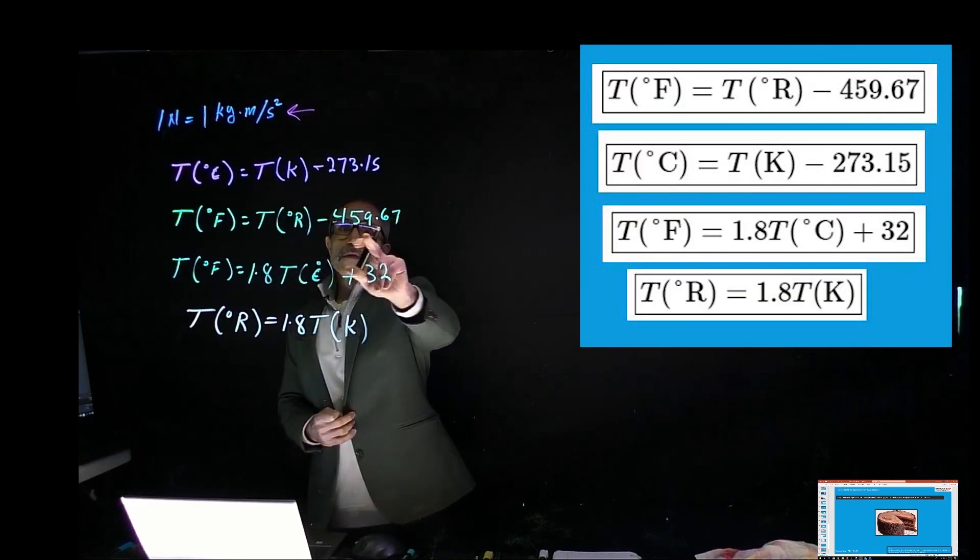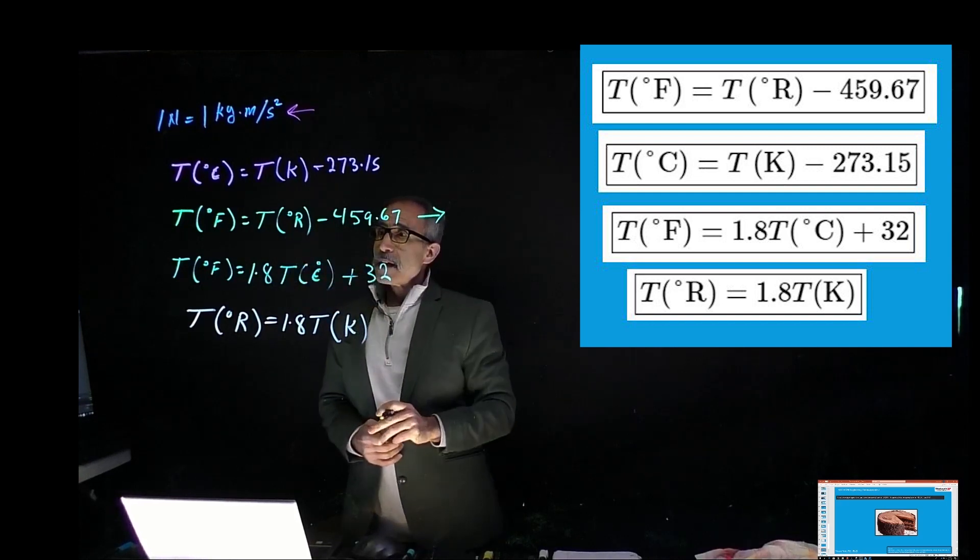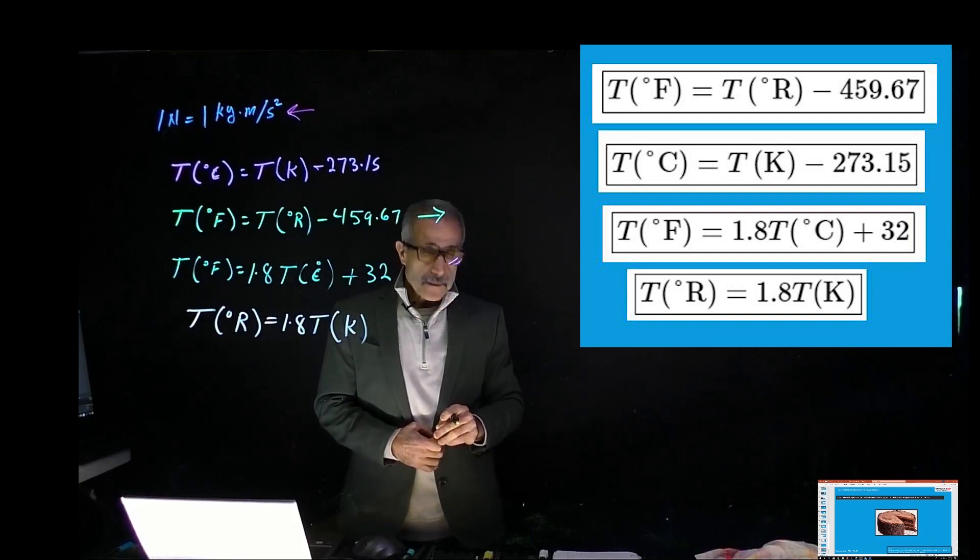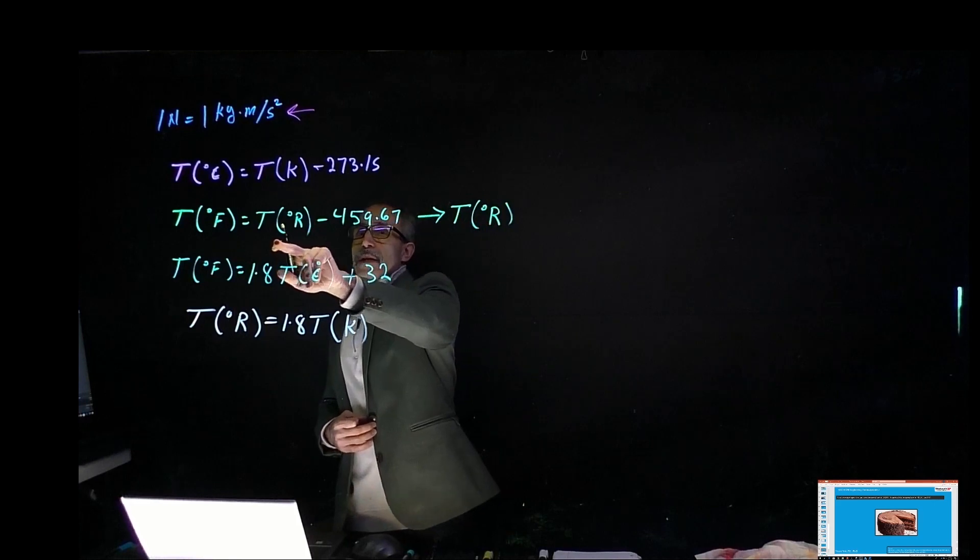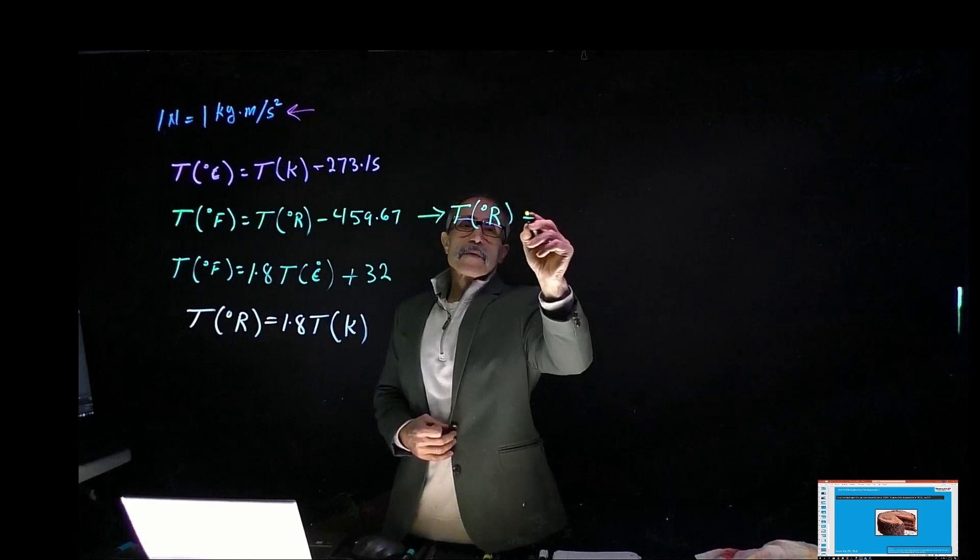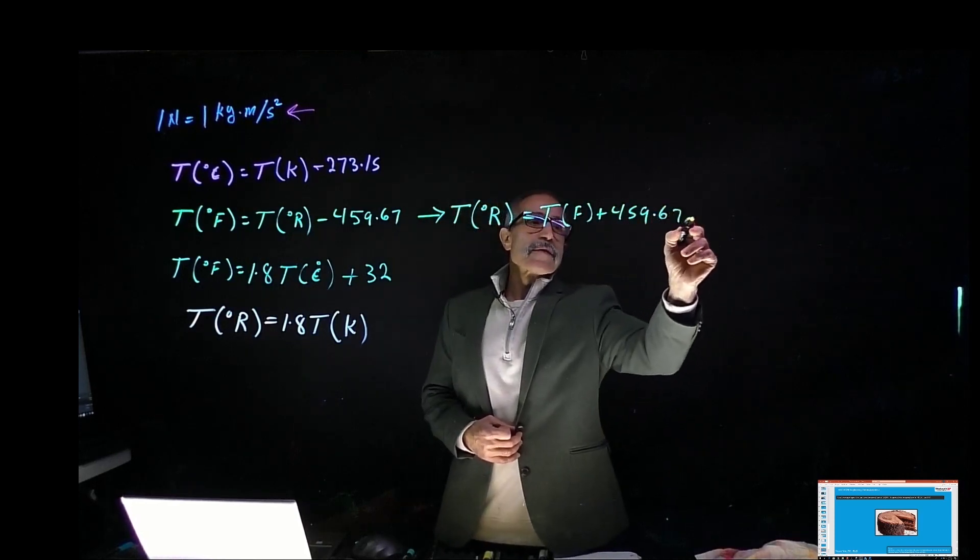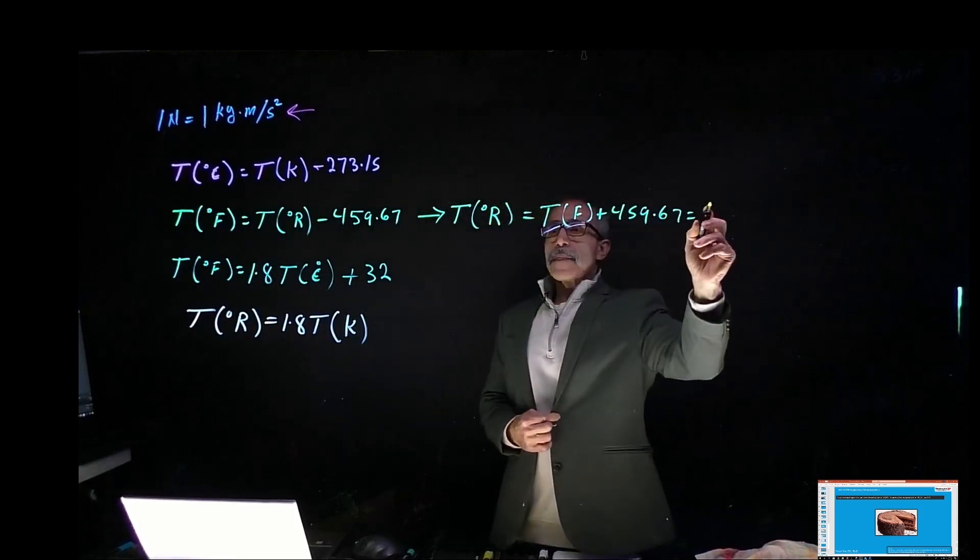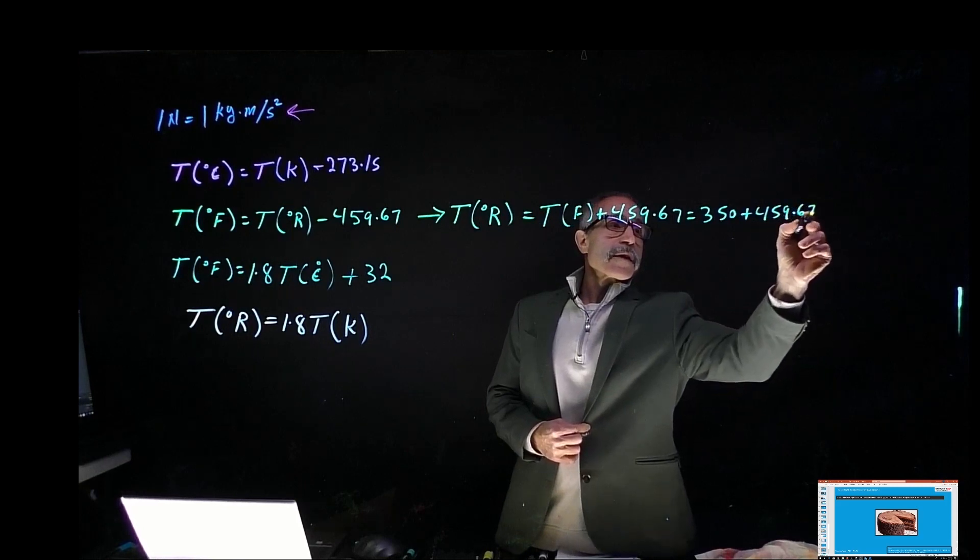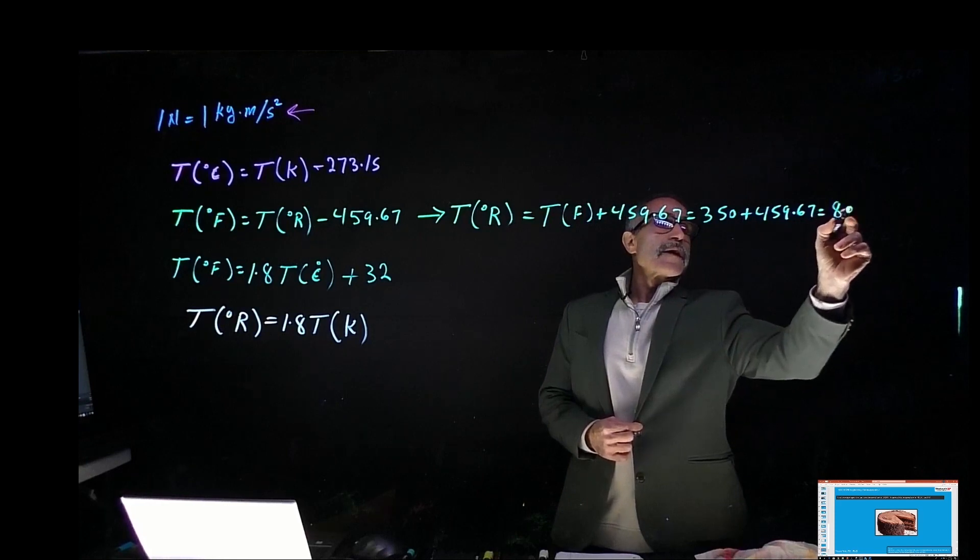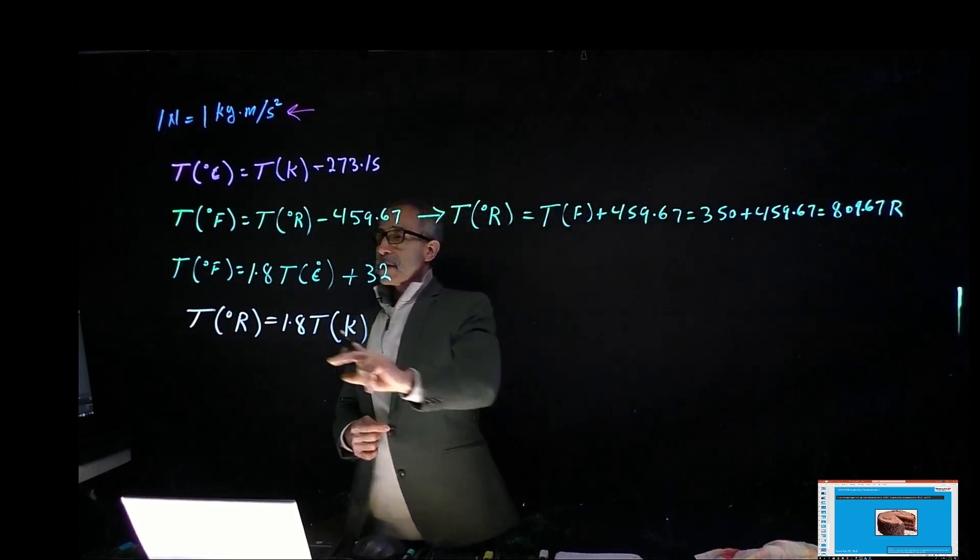The first thing we're going to do is use this formula. T of Rankine equals T of Fahrenheit plus 459.67. In this case it's going to be 350 plus 459.67, so that'll give me about 809.67 Rankine.